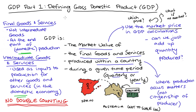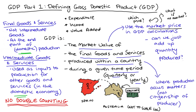The distinction between intermediate and final goods and services is important for understanding the methods we use to measure GDP. There are three ways we measure GDP in practice: we can sum up total expenditure — that's the expenditure approach; we can add up total income — that's the income approach; or we can add up the value produced at each stage of the production process of a final good or service — that's the value added approach. In the next video, I'll go through the logic behind why these three ways of measuring GDP give us the same result, and why expenditure equals income equals production — a central idea in macroeconomics.